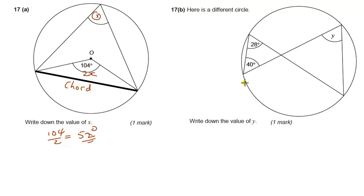The next question uses this rule again from a chord. The angles formed from a chord on the circumference are always the same. So this angle in here and this angle over here are the same. So 28 and y are the same. So y equals 28.